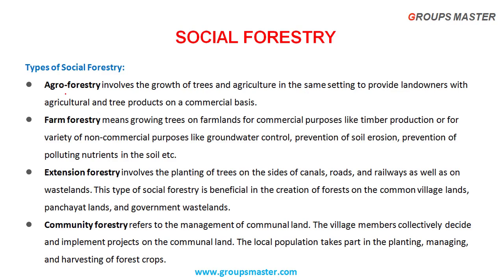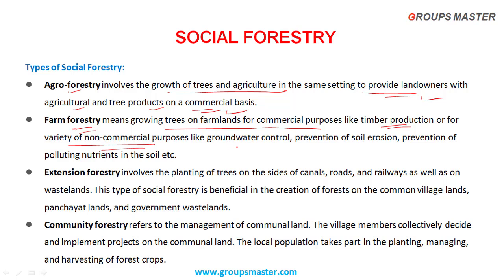Types of social forestry. First: Agroforestry - the growth of trees and agriculture in the same setting to provide landowners with agricultural and tree products on a commercial basis. Second: Farm Forestry - growing trees on farmlands for commercial purposes like timber production, or for non-commercial purposes like groundwater control, prevention of soil erosion, and prevention of nutrient pollution in the soil.